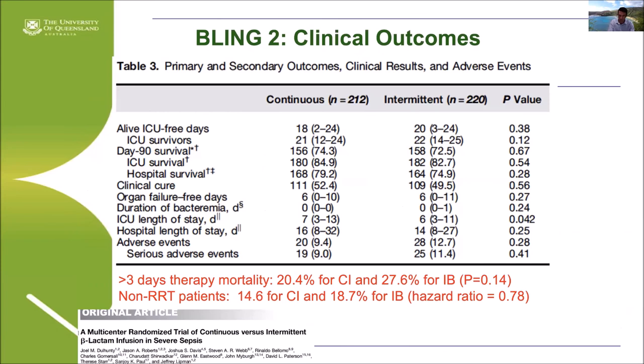This clinical question was advanced into the BLING2 study enrolling 430 patients, mostly in Australia and New Zealand, where no difference in clinical outcome was observed — reflecting a different case mix of patients. However, there was an improvement in mortality — a reduction in mortality for continuous infusion — in patients who received at least three days of therapy and who were not receiving renal replacement therapy, since those patients likely already have elevated concentrations due to reduced clearance.